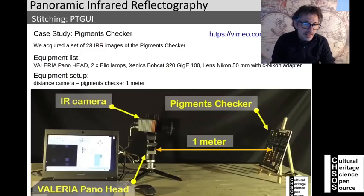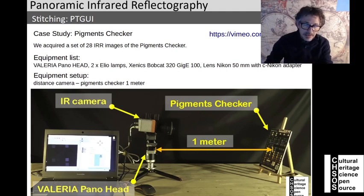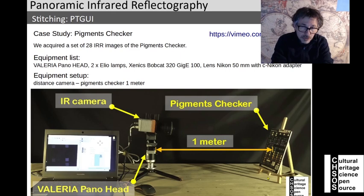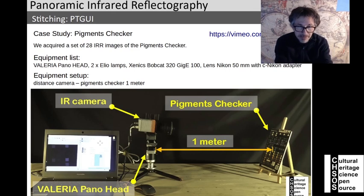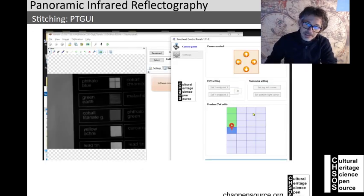This class is about stitching. We are going to use as an example the images we shot. In this picture, we placed the pigment checker at about one meter from the Ingas camera, which was mounted on Valeria's pan head. In this experiment we took 28 images arranged in seven rows and four columns.